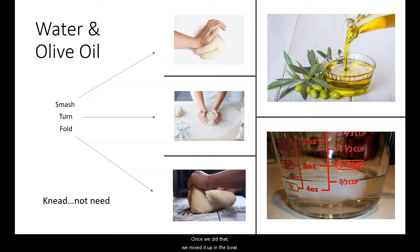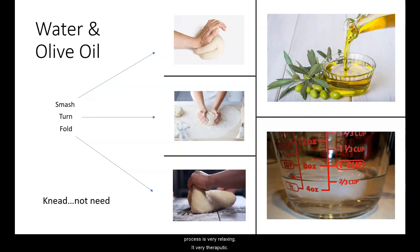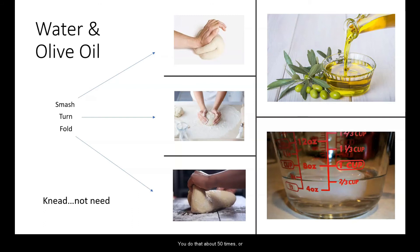Once we did that, we mixed it up in the bowl. It becomes gooey and doughy, and when that happens we take it out, put it on the kitchen counter — and it looked like a biscuit. Then we went into a process called kneading — K-N-E-A-D, kneading. In the baking industry, kneading is very popular and very therapeutic. With kneading, all you do is take that ball, smash it down, turn it, fold it over, and do it again — about 50 times, about a minute to a minute and a half.